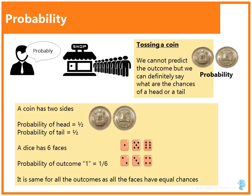Probability of outcome 1 when 6 faced dice is thrown is 1 by 6. In fact, it is same for all the outcomes 1, 2, 3, etc. All faces have equal chances.